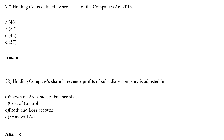Holding Company Share in Revenue Profit of Subsidiary Company is adjusted in — shown on Assets Side of Balance Sheet, Option C Cost of Control, Option C Profit and Loss Account, Option D Goodwill. The correct answer is Option C Profit and Loss Account. Holding Company Share in Revenue Profit of Subsidiary Company is adjusted in Profit and Loss Account.